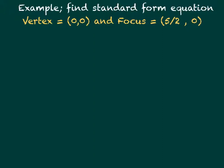For this first example, we want to find the standard form equation of the parabola. We don't know yet if it's vertical or horizontal - that's one thing we need to figure out. We're given vertex (0,0) and focus (5/2, 0).